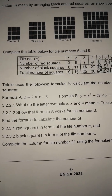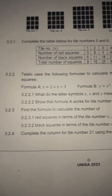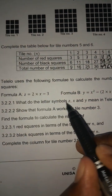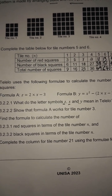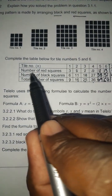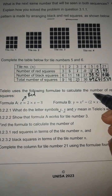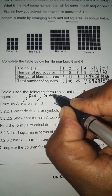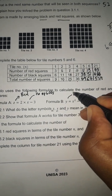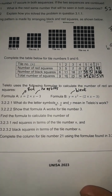In question 3.2.2, Telelo uses two formulas: Formula A is z = 2x − 3, and Formula B is y = x² − (2x − 3). The letter z stands for the number of red squares, x stands for the number of tiles, and y stands for the number of black squares.